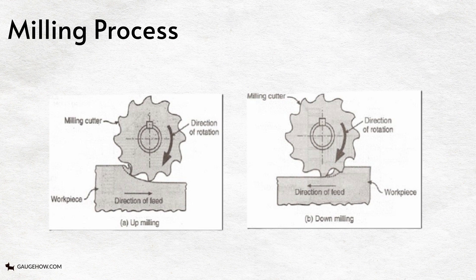In up milling, the thickness of the chip at start is nil and is maximum when the cutting teeth leaves the surface of the workpiece. In down milling it is vice versa.